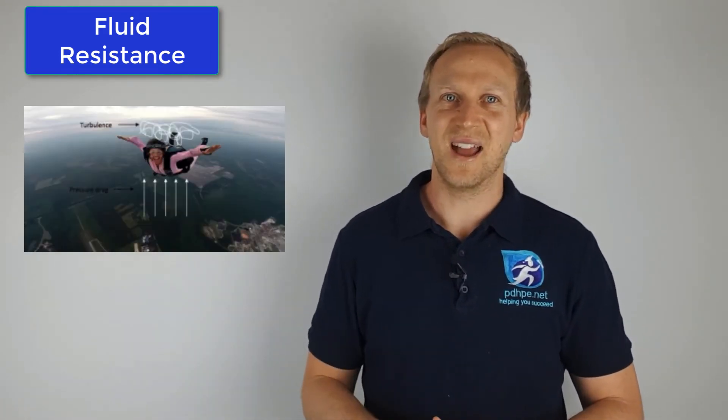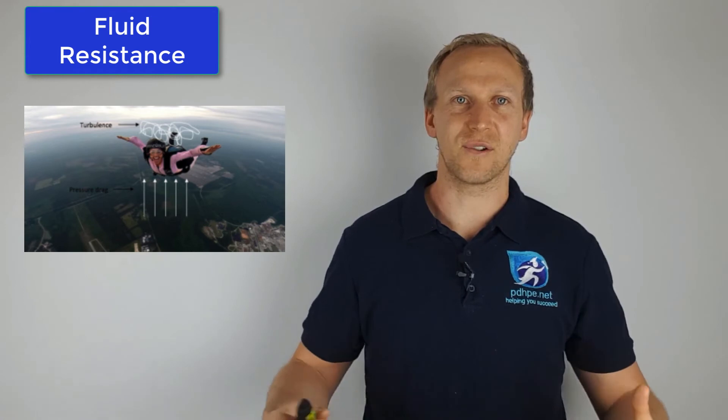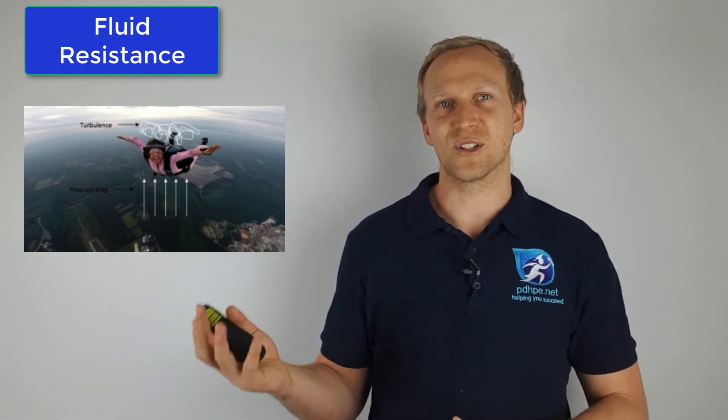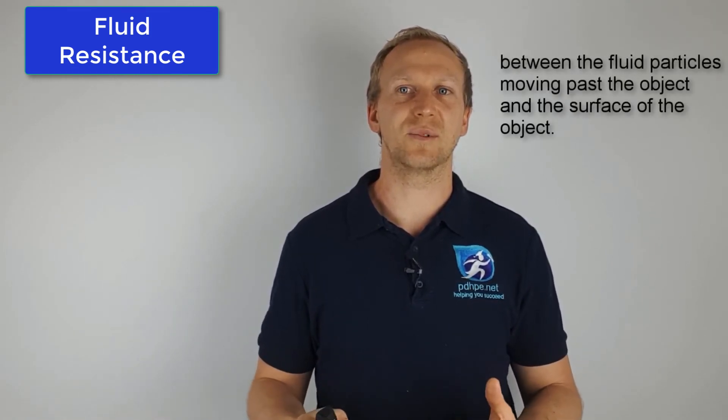In a sport like skydiving — as seen in the picture — you actually want to increase your drag, increase turbulence, and increase front pressure resistance, which also comes from the parachute. Friction drag, on the other hand, is the friction between fluid particles moving past the object and the surface of the object. We often use swim caps, goggles, or swimsuits to reduce friction, because they are smoother so the water or air has less friction and less drag as it moves through the fluid.